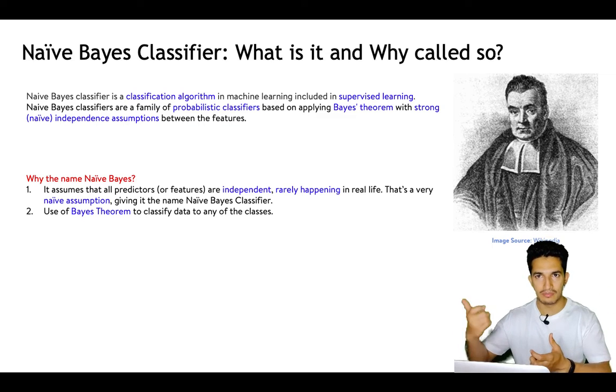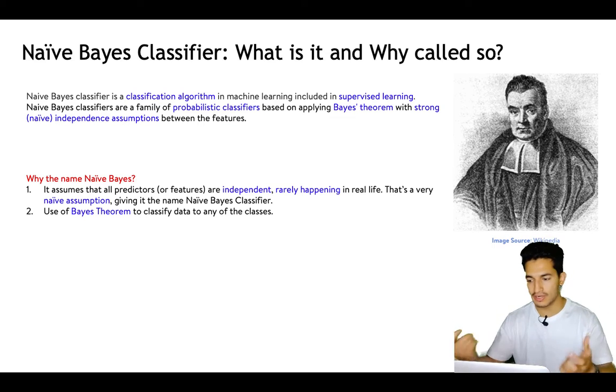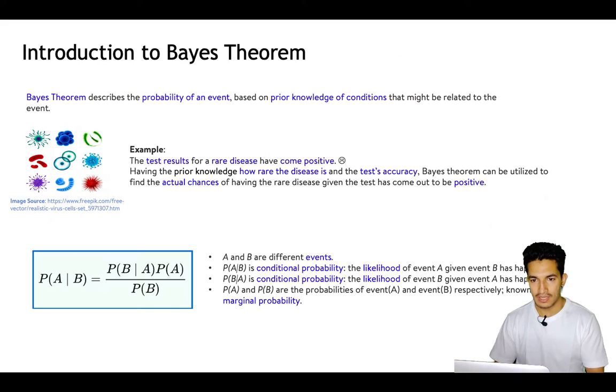By the name 'Naive Bayes' — the naive assumption assumes all predictors or features in our data are independent of each other, which rarely happens in real life. But it makes that assumption, and it also uses Bayes theorem. That's why it's called Naive Bayes classifier.